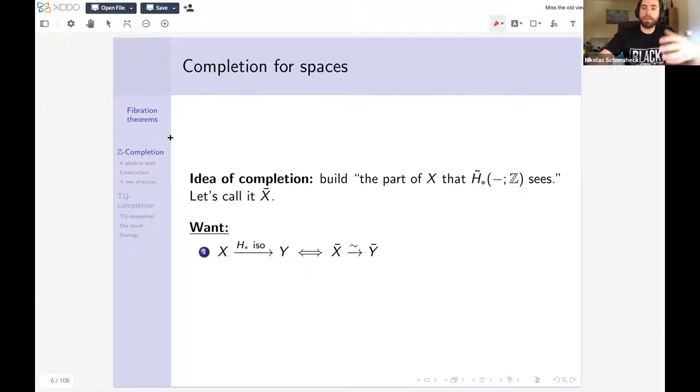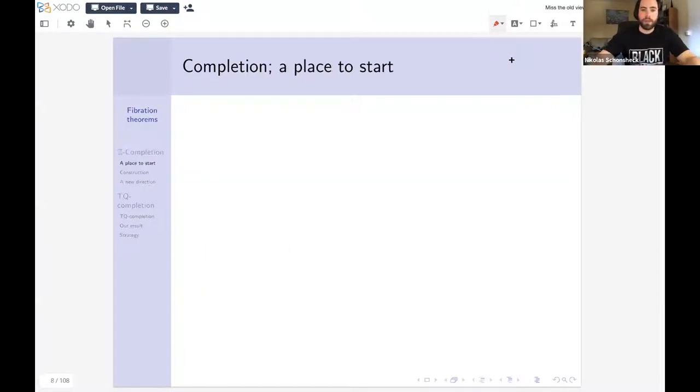There's a couple of desirable properties. If X bar is supposed to be capturing just the homological information, we would want that construction to not be able to distinguish between two spaces with the same homology. So if I've got a map X to Y inducing a homology isomorphism, I would want them to be weakly equivalent. And I should point out from now on, any H star you see really means reduced homology with integer coefficients. If we're trying to build the part of the space that homology sees, though, we'd want some sort of comparison from the original space to this new construction. So we'd want a map from X to X bar, and at the very least, we'd ask that it be a homology isomorphism.